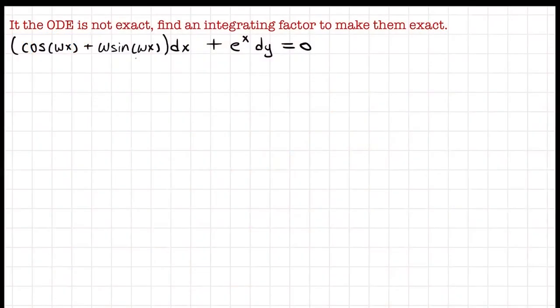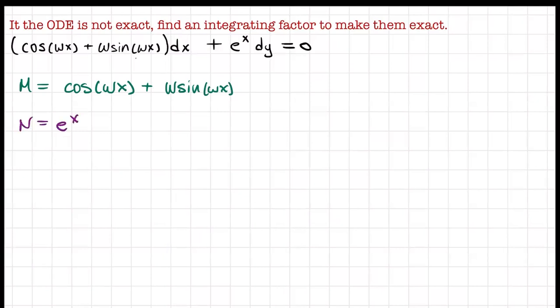Welcome back to the video on integrating factors. In this one we're going to start a problem like we did with exact equations, following the exact same method, and then you'll see what happens if we cannot get them to be exact. So once again let's identify M and N. M will be the expression in parentheses: cosine of omega x plus omega sine of omega x, and N will be e to the x.